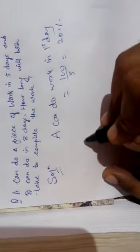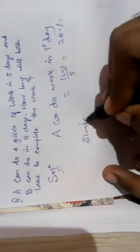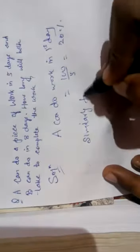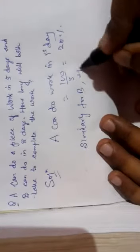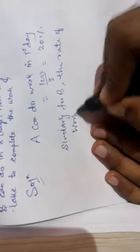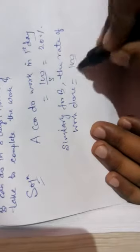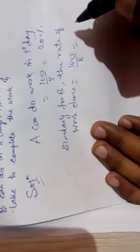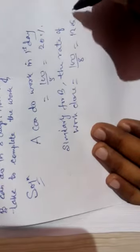Similarly for B, the rate of work done is equal to 100 by 8, which equals 12.5 percent.